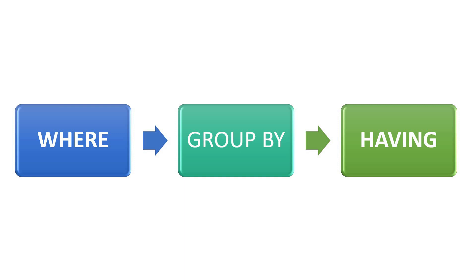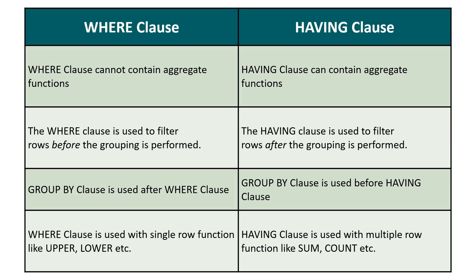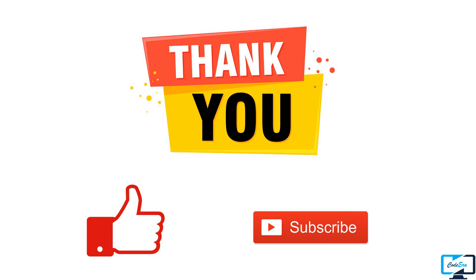Our last difference is: the where clause is used with single-row functions like upper, lower, etc., while the having clause is used with multiple-row functions like sum, count, average, etc. Since the where clause implements row operations it is used with row functions, while the having clause operates on grouped data so it uses multiple-row functions. That's all for this video — I hope you now know when to use where and having clause. In the next video we will discuss some built-in functions in SQL. Keep watching Codera and don't forget to like and subscribe. Thank you!